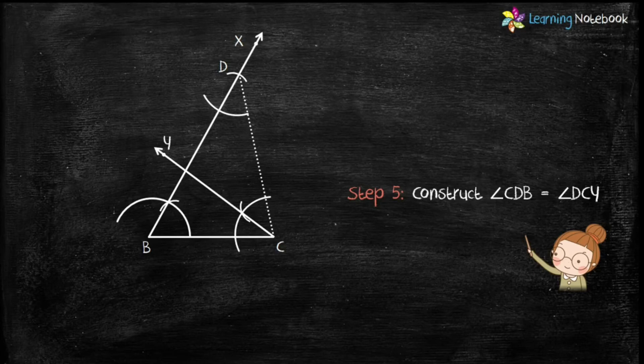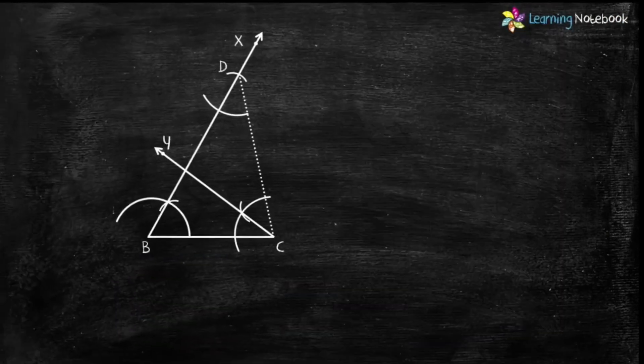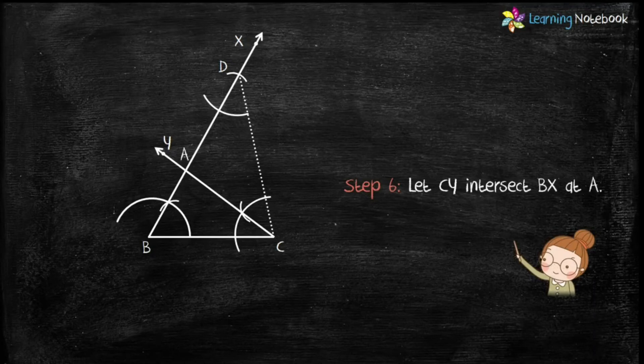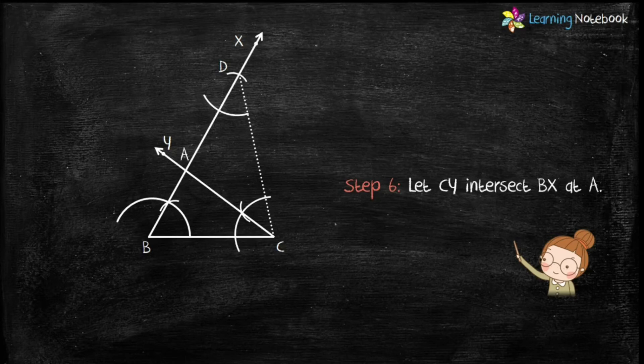So we have drawn angle CDB equals to angle DCY. Now in last step, let CY intersect BX at point A. So students, triangle ABC is the required triangle.